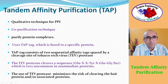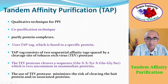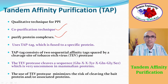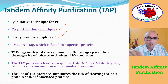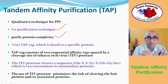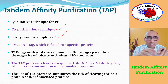TAP is a qualitative technique for determination of protein-protein interactions. By using this technique you can identify partners of a protein in cellular conditions. It's a co-purification technique that purifies protein complexes. You take a protein of interest, insert its gene into a cell, and inside the cell it will associate with other proteins. Then you fish out the protein of interest and find out its partners.